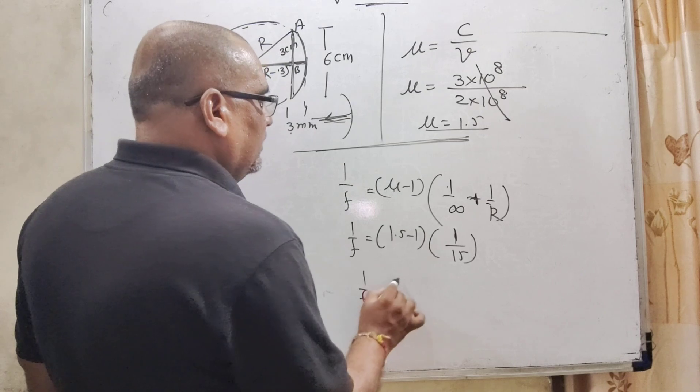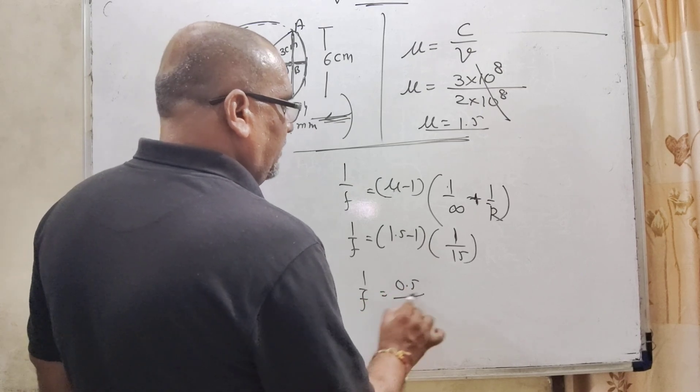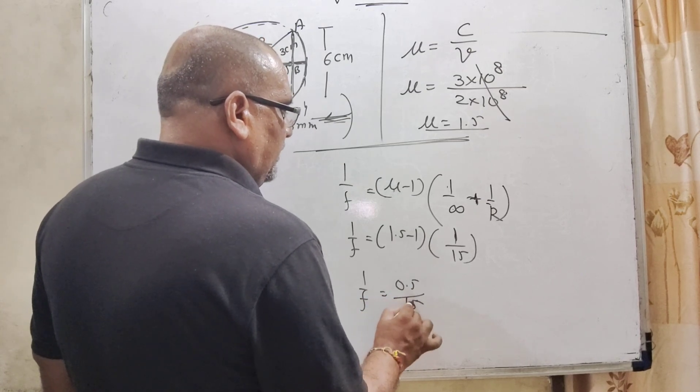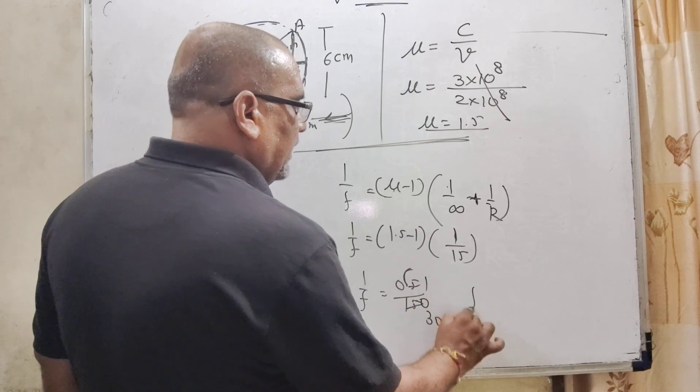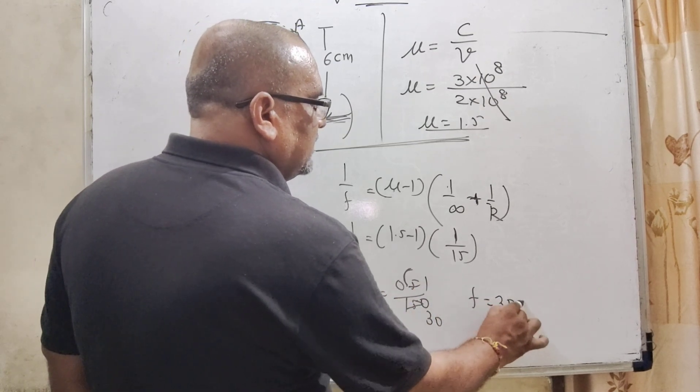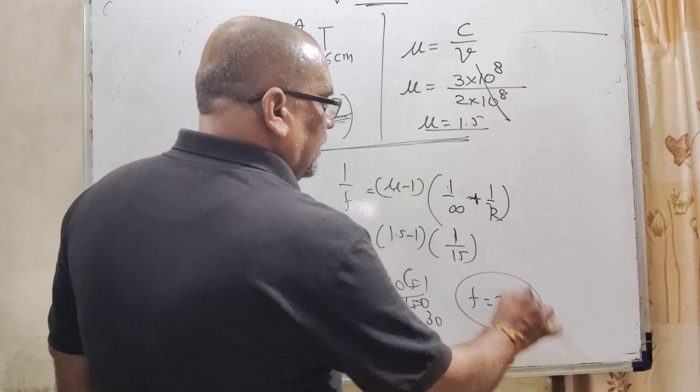1/F = 0.5/15. Decimal removing, then 5/30. Then F = 30 centimeter.